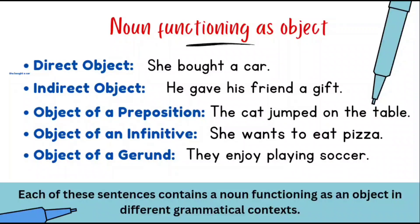Object of a preposition: 'The cat jumped on the table.' The cat is the subject, jumped is the verb, and 'on' is a preposition. 'Table' is the object of the preposition 'on'.